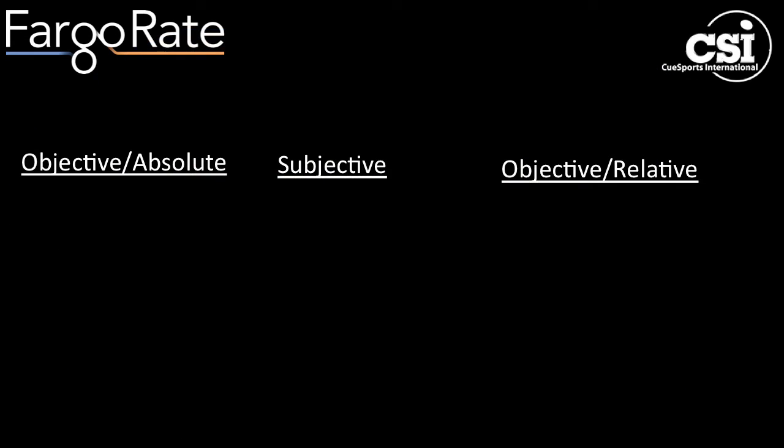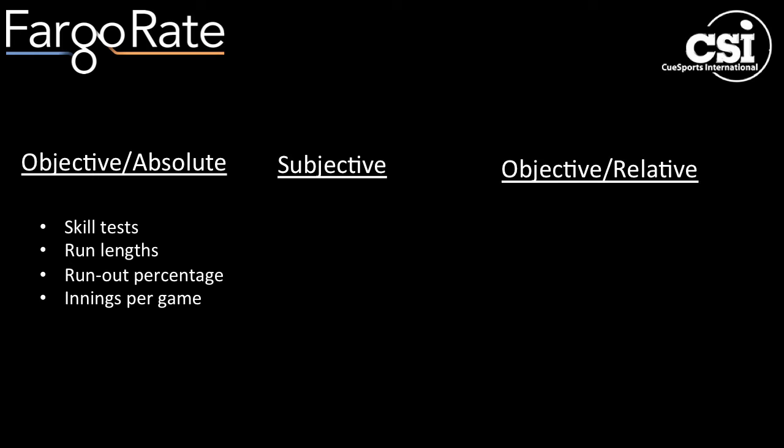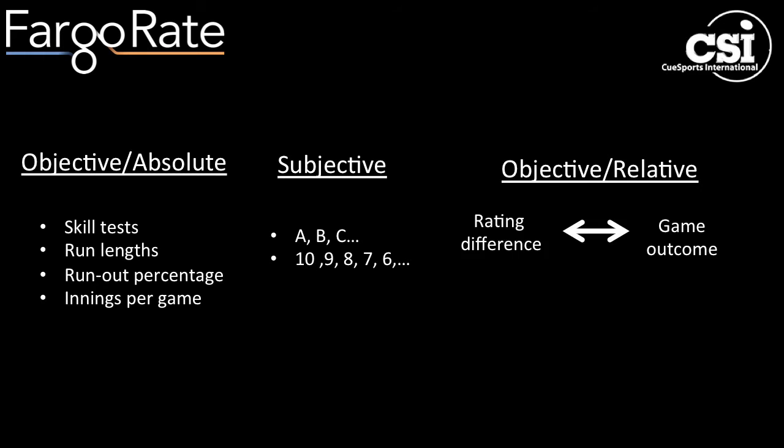There are three general flavors of rating approaches. Absolute approaches involve things like skill tests, inning counts, runout percentages, or run lengths. Subjective approaches involve categorizing players according to a judgment of skill level. And relative approaches involve exploring a connection between the rating difference between two players and the game outcome.